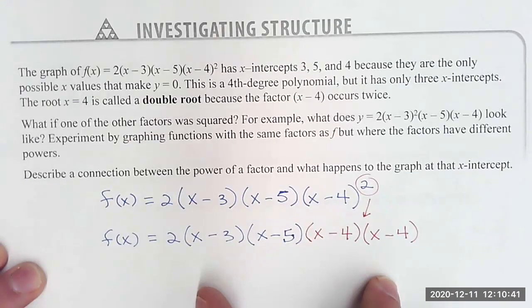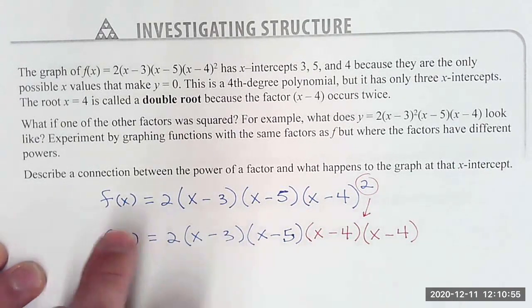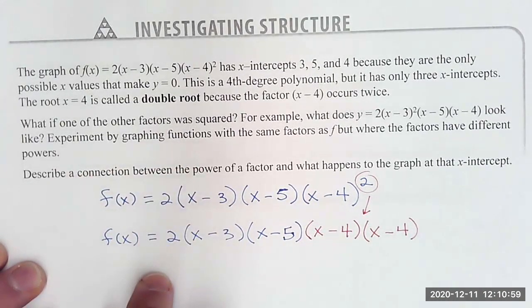What did the graph look like locally at that root? If you were to circle just that part around that root, what did the graph look like? Also experiment by graphing functions with the same factors as f but where the factors have different powers.